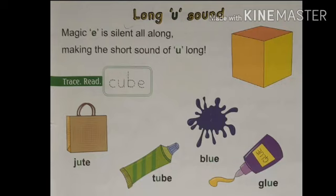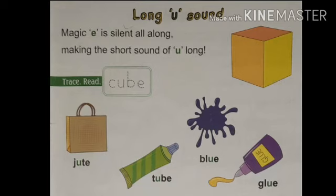Cube is a shape — it is a 3D shape. Cube 3D shape में count होता है. It is a name of a shape. For example, cube shape का क्या होता है? Box, dice — yes, all these are in cube shape.